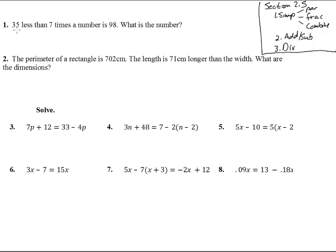Number one: 35 less than—that's going to be subtracted—so we're going to take 7 times a number. Let's do n. 7 times a number, 35 less than that is 98. What's the number? We're going to solve this. We don't have any parentheses or fractions combining, so we add the 35 and divide by 7. We get 19 is the number.